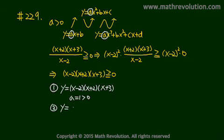And secondly, y equals x minus 2 times x plus 2 times x plus 3. If this equals 0, then x could be 2 or minus 2 or minus 3.